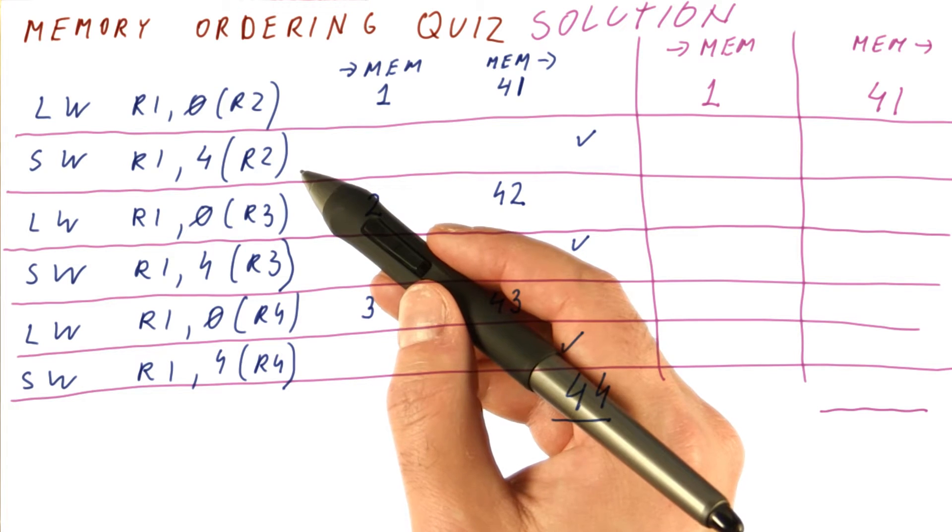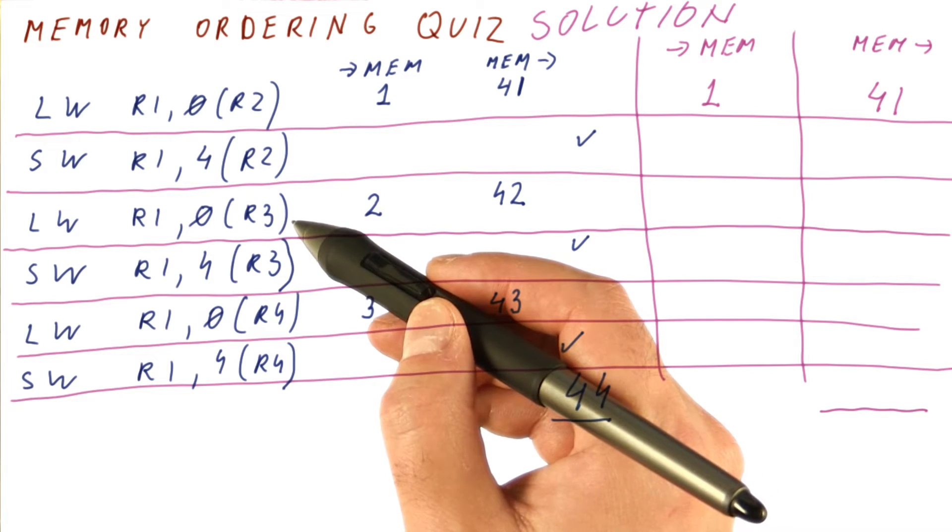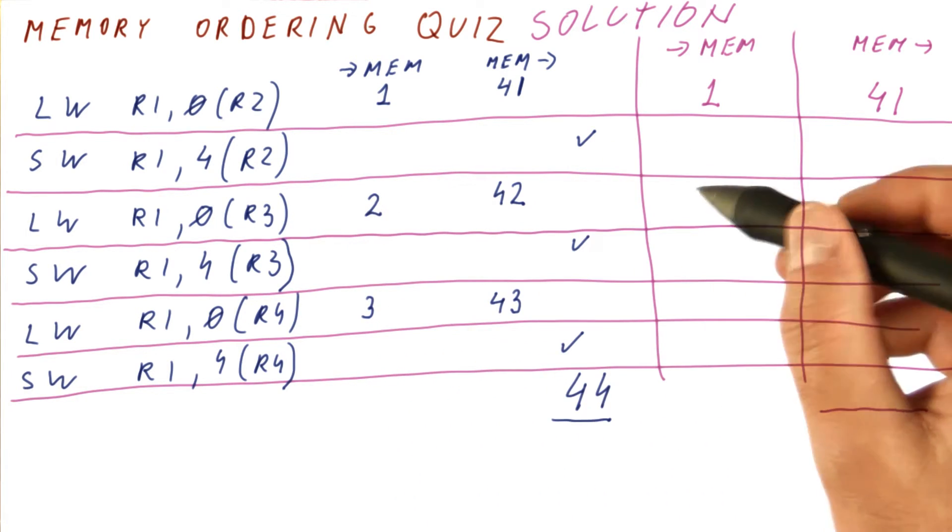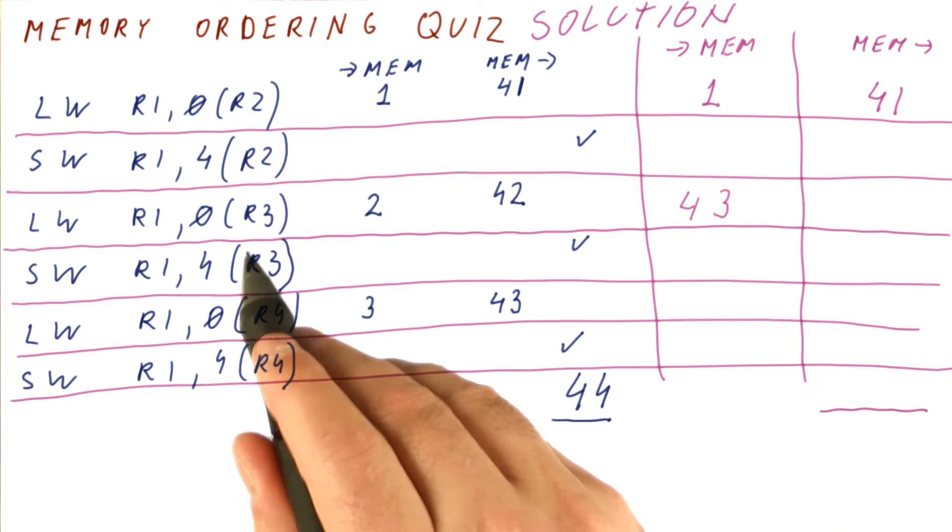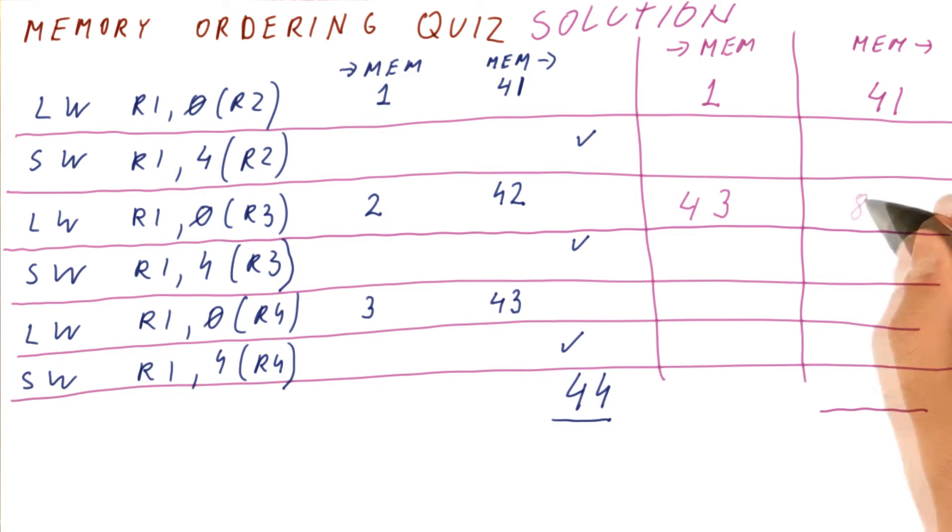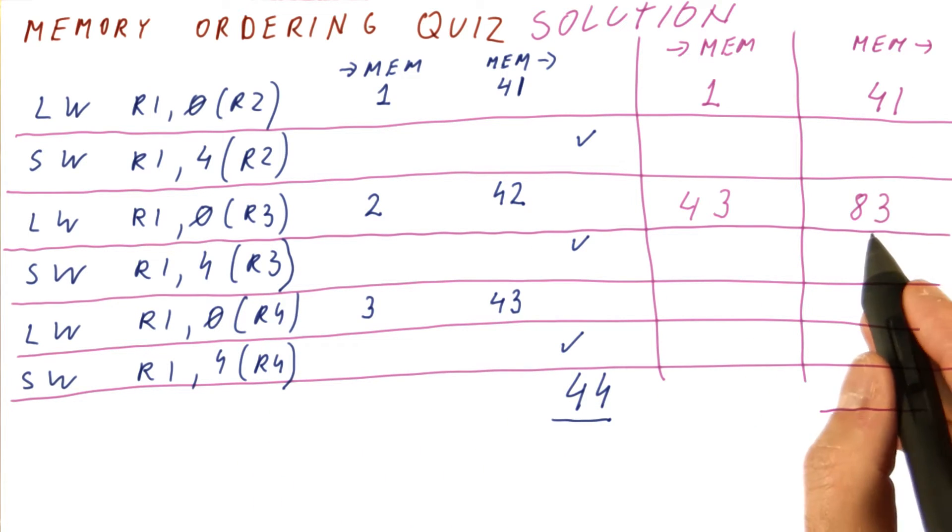Because we need to do things in order, that means that only in cycle 43 this load can start going to memory. It's going to take 40 cycles to come back. So in cycle 83, the value comes back from memory.